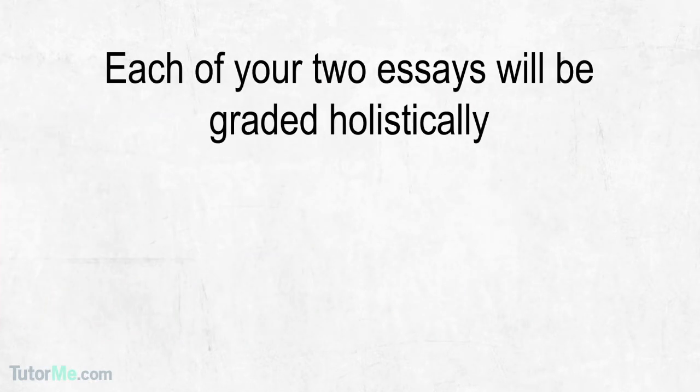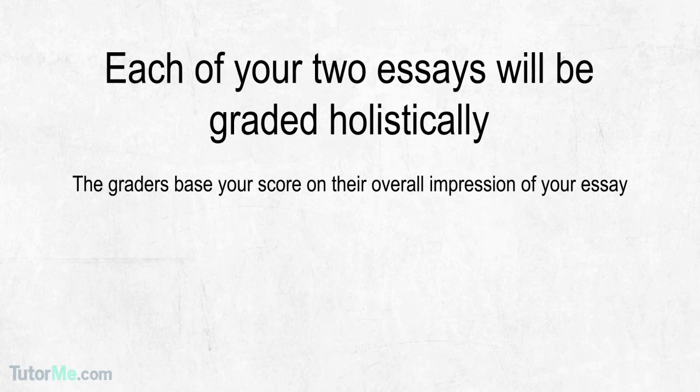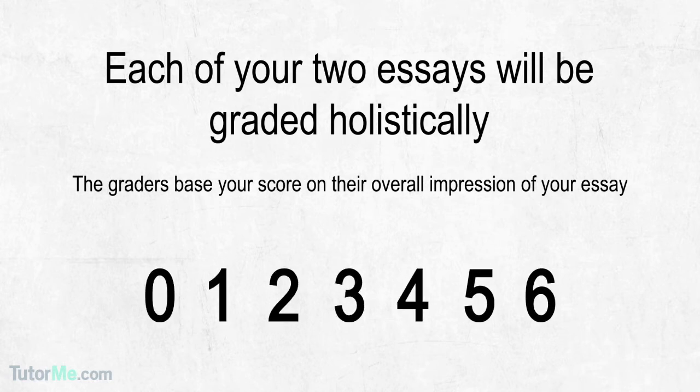Each of your two essays will be graded holistically, meaning that the graders base your score on the overall impression of your essay rather than deducting specific point values for errors. You will receive a score between 0 and 6 for each essay. With the holistic grading method, papers are read quickly and a score is assigned based on general impact of the writing on the reader.